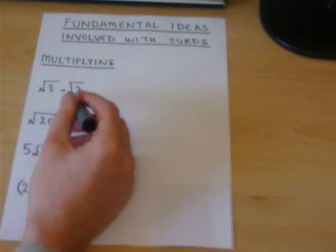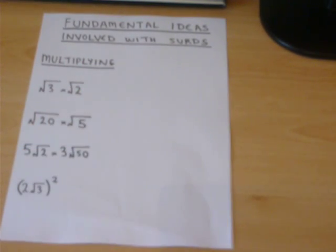These are all examples of thirds, square roots which cannot be worked out. However, it is easy to multiply two thirds together.